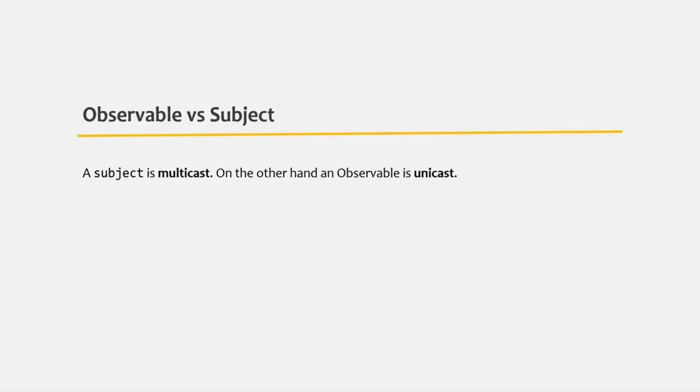Basically, a subject is multicast. On the other hand, an observable is unicast. Let's try to understand this with an example.